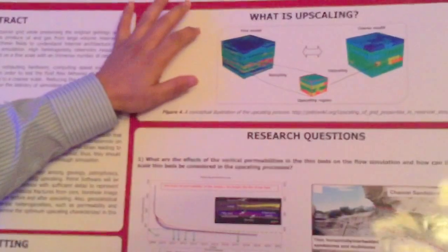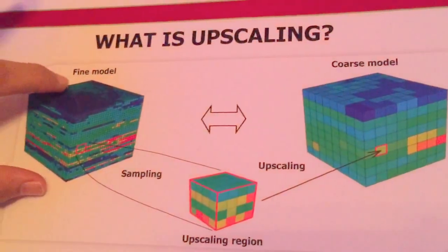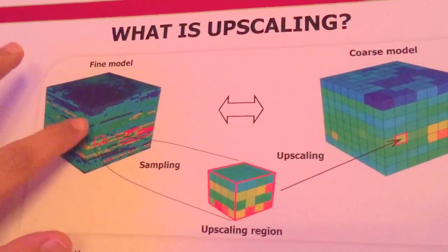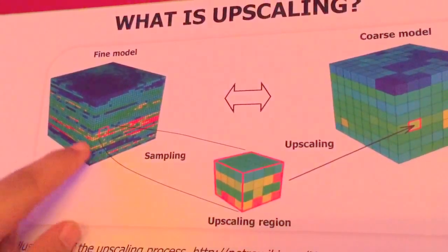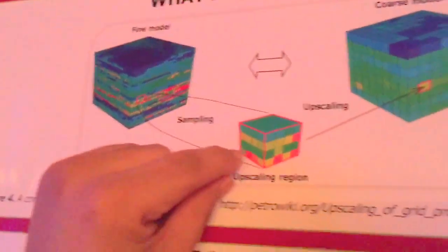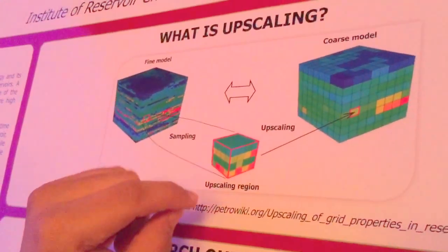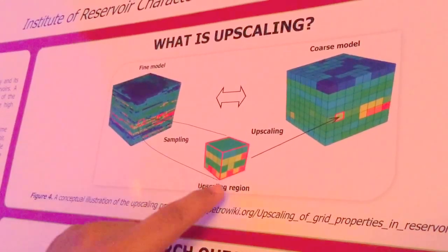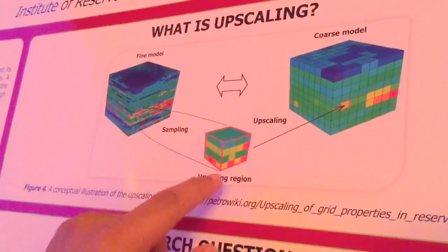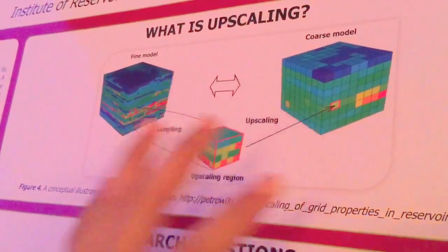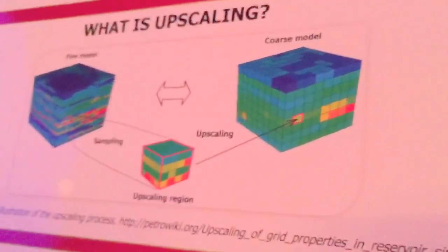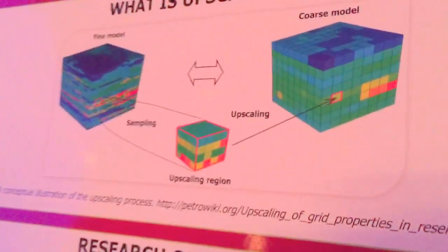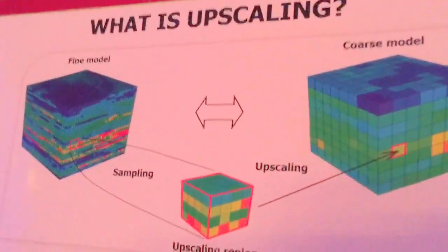Let's begin with the definition of upscaling. Here you have the conceptual model of static model with numerous numbers of cells. And then you sample your static model and then you average all the properties and you will reduce the small size of those static models to become a coarse model with these numbers of cells. So in this case, you reduce the number of cells and also you change the actual reservoir heterogeneity.